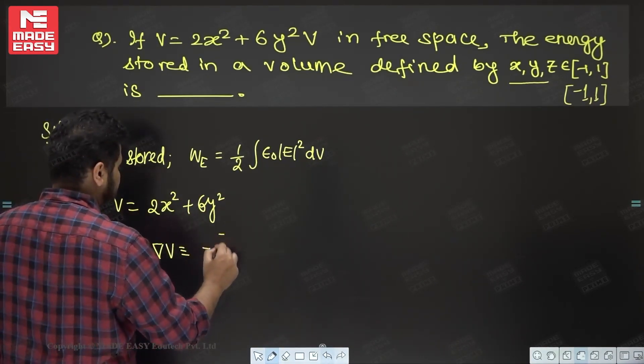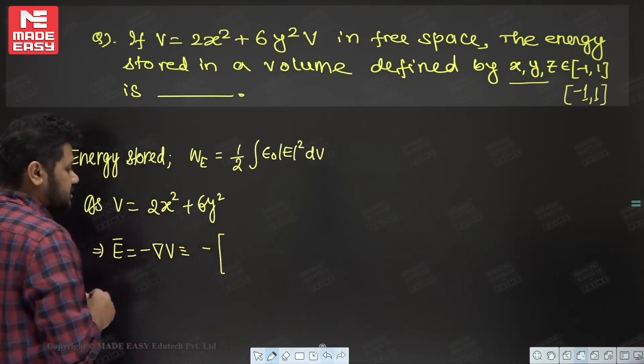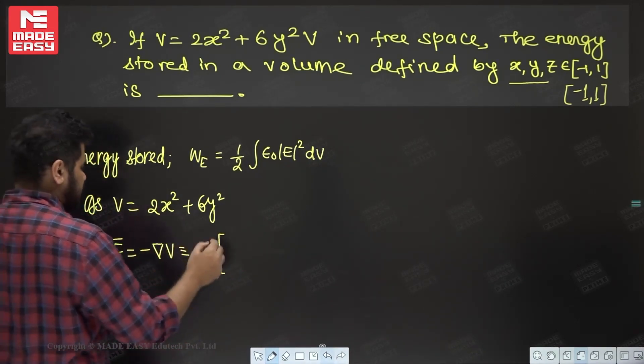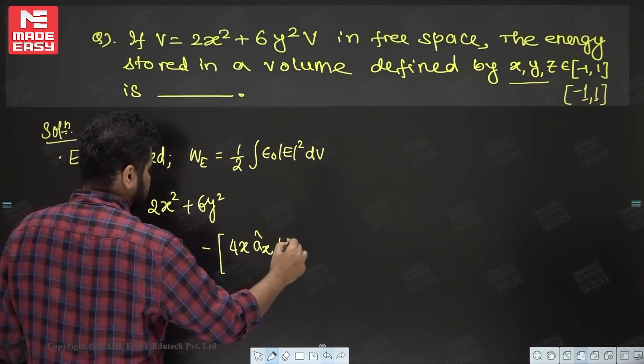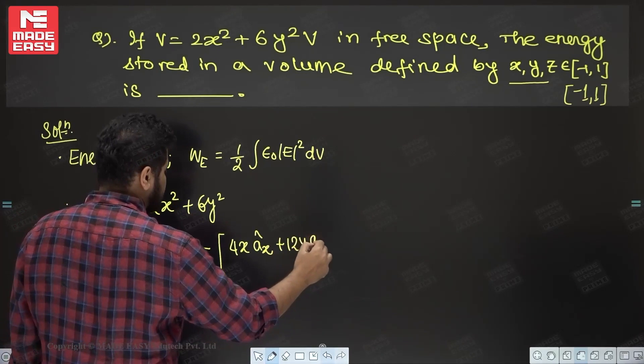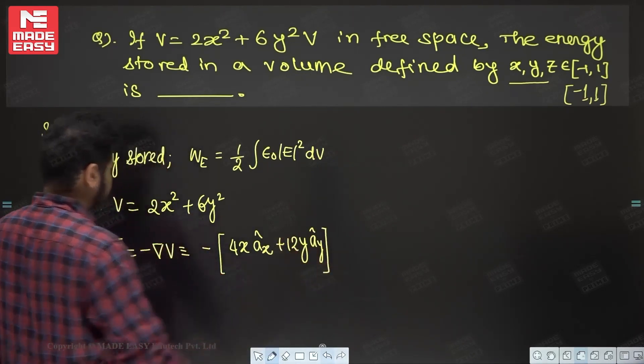This is in Cartesian coordinate system, so del upon del x. That means first of all it will come 4xAx + 12yAy. This is the value we are going to get.